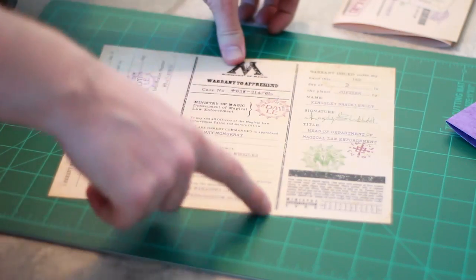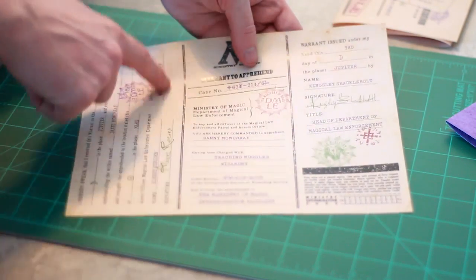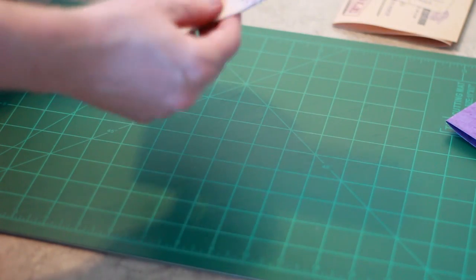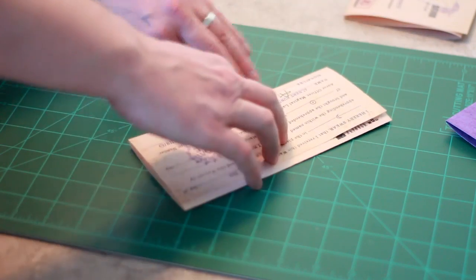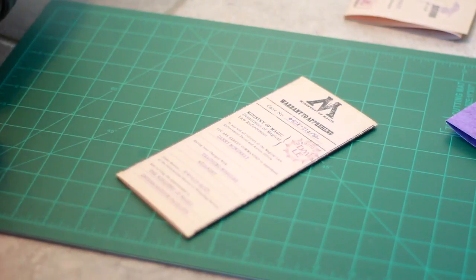And then we also want to do a couple of folds on this warrant to apprehend. That's basically right where these lines are. So we'll do one fold right about here, and then another fold right about there. And then we should have the warrant to apprehend.